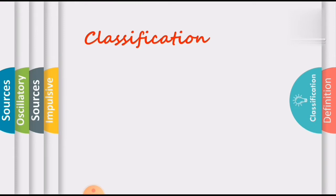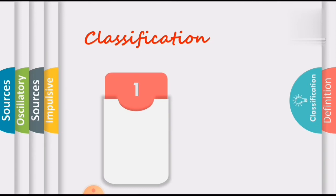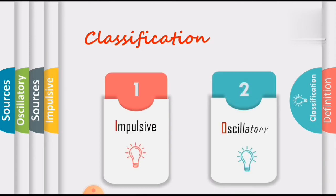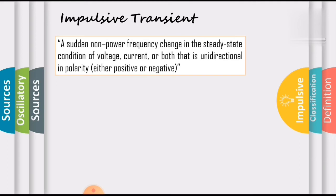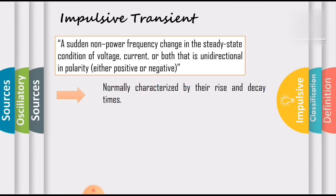These transients are classified into two types: one is impulsive, and the second one is oscillatory. According to the definition, an impulsive transient is a sudden non-power frequency change in the steady state condition of voltage, current, or both, that is unidirectional in polarity — that is, either positive or negative.